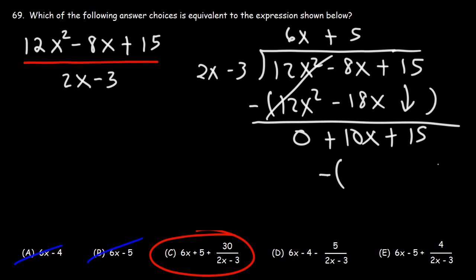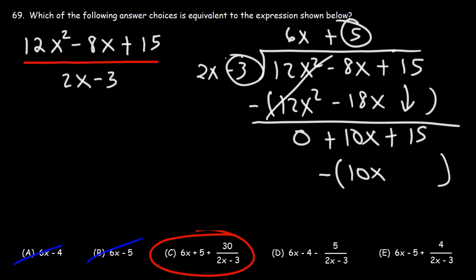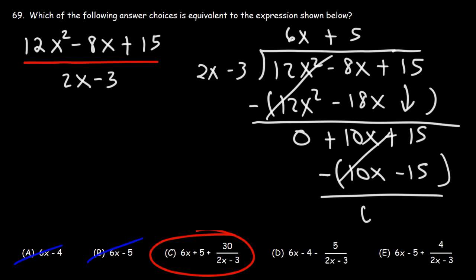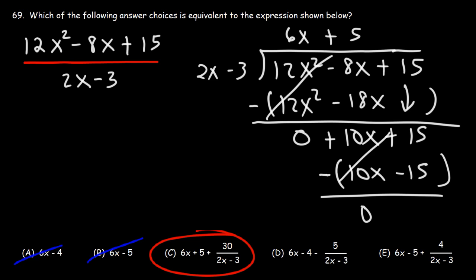Let's put our subtraction symbol and then multiply. 5 times 2x is 10x, and 5 times negative 3 is negative 15. Now let's subtract. 10x minus 10x is 0. 15 minus negative 15 — the two negative signs become a positive — so that's 15 plus 15, which is 30.